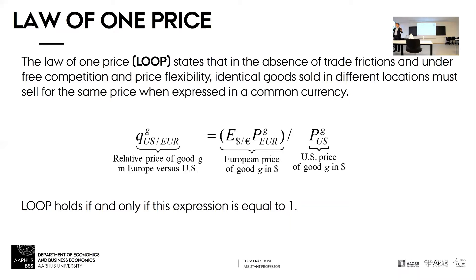If it's not, you're going to buy the computer in the cheaper place and sell it in the more expensive place. You're going to do that until the two prices are equal to one. So this is what the law of one price is.